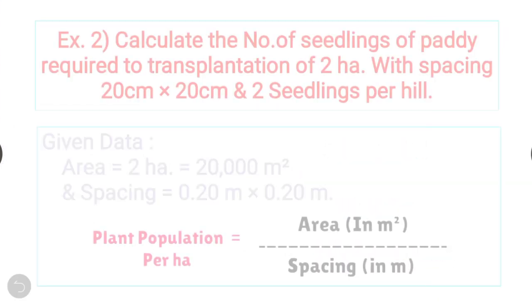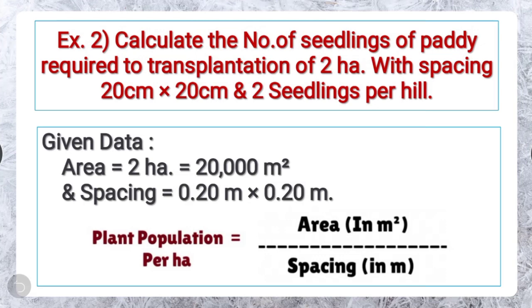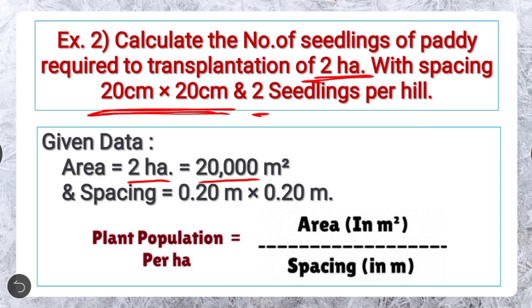Now see numerical number 2. Calculate the number of seedlings of paddy required to transplant 2 hectares of area with a spacing of 20 cm × 20 cm and 2 seedlings per hill. Given: area is 2 hectares, that is 20,000 meter square. The given spacing is 20 cm × 20 cm, which converting into meter will be 0.20 meter.